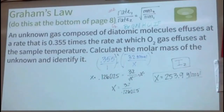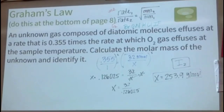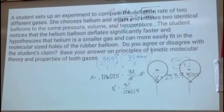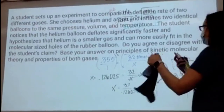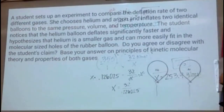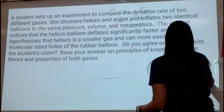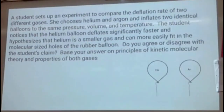Effusion and diffusion are related to the speed and molar mass of the gas. Speed is only based on molar mass, while average kinetic energy is based on temperature. This is an AP-style practice question — it says a student compares the deflation rate of helium and argon balloons inflated to the same pressure, volume, and temperature.